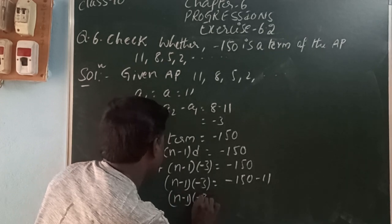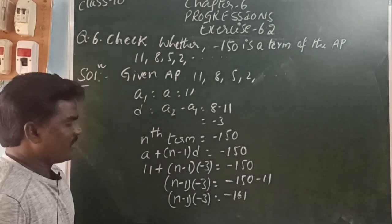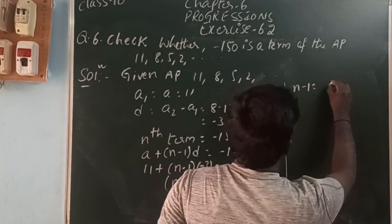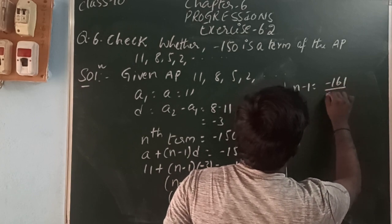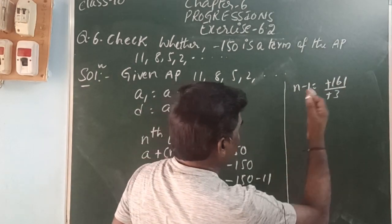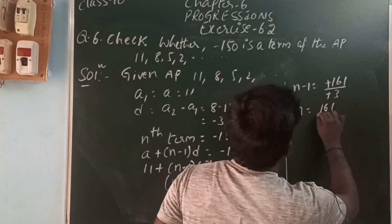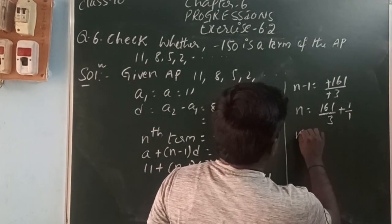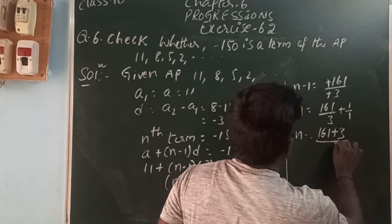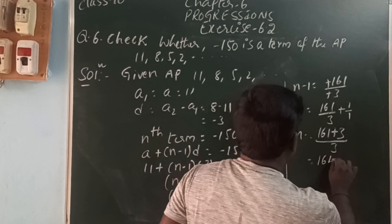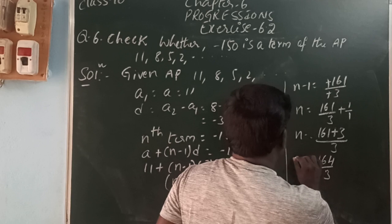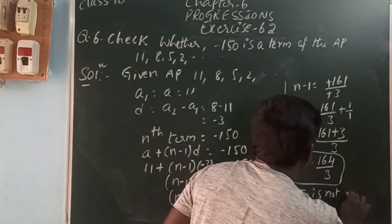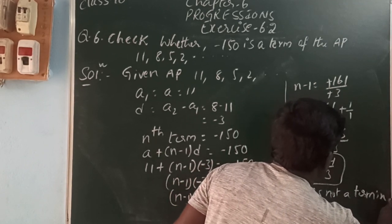So n minus 1 into minus 3 is equal to minus 161. Taking minus 3 to the other side to divide: n minus 1 is equal to minus 161 by minus 3. The negatives cancel, so n minus 1 is equal to 161 by 3. Therefore n is equal to 161 by 3 plus 1, which gives 164 by 3. Since this is not a whole number, minus 150 is not a term in the given AP.